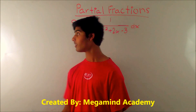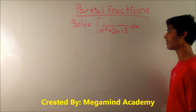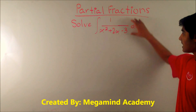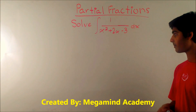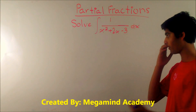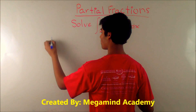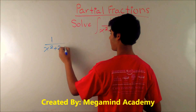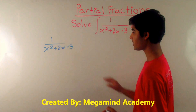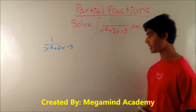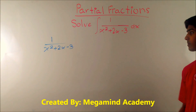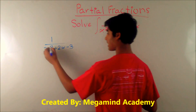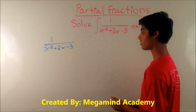Today we're going to learn about partial fractions. Let's say you have to solve the integral of 1 over x squared plus 2x minus 3 dx. As you can see, we don't really know how to solve this integrand. We can't split up the numerator because it's just 1, and we don't know how to split up the denominator. Well, there is a way to split up the denominator to get two different fractions — this is called partial fractions.